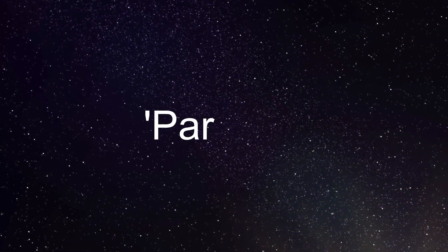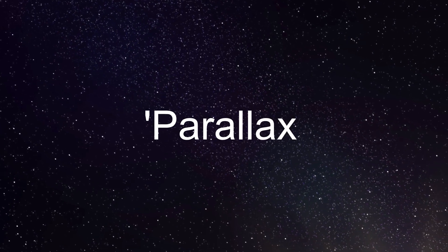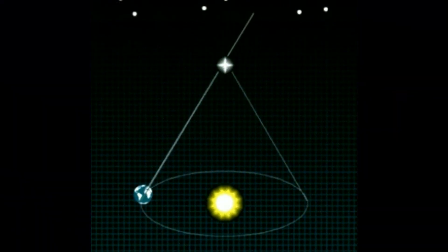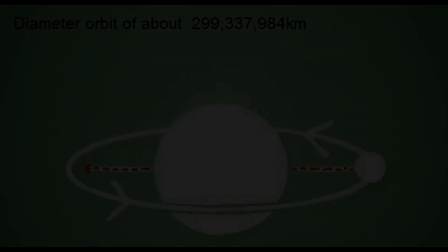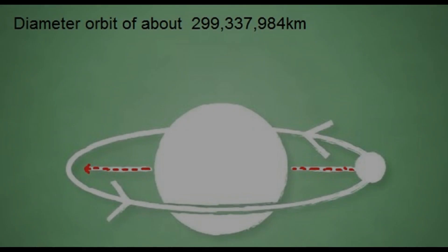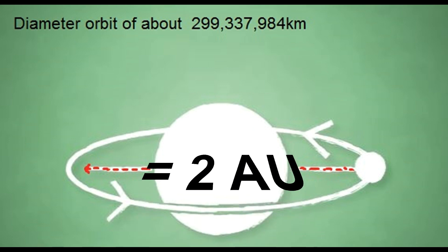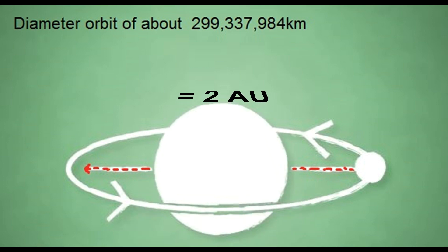There are two major techniques that astronomers use to estimate the distance of any given star. The first technique involves triangulation, also known as parallax. The Earth orbits the Sun, and as this happens, it forms an orbital diameter of 299,337,984 km, or in simple terms, two astronomical units.